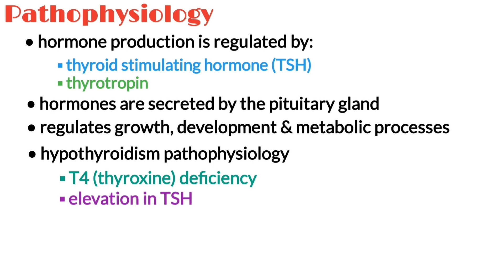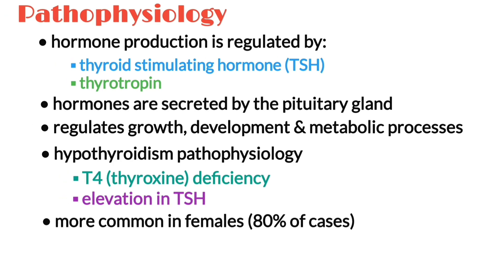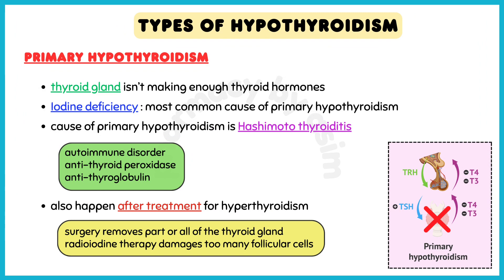Hypothyroidism occurs more commonly in females, accounting for 80% of cases. There are two types of hypothyroidism: primary and secondary.